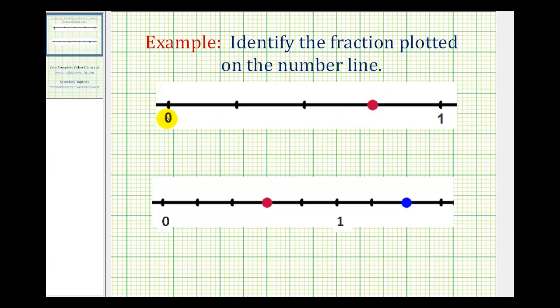Looking at the first number line, notice we have zero here and one here. And from zero to one is divided into one, two, three, four equal pieces, which means each tick mark represents one-fourth.